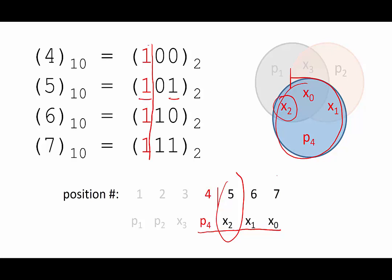Similarly, the message bit in position 7, which has a 1 in the 1's, 2's, and 4's places, lies at the intersections of all 3 circles for parity bits 1, 2, and 4.